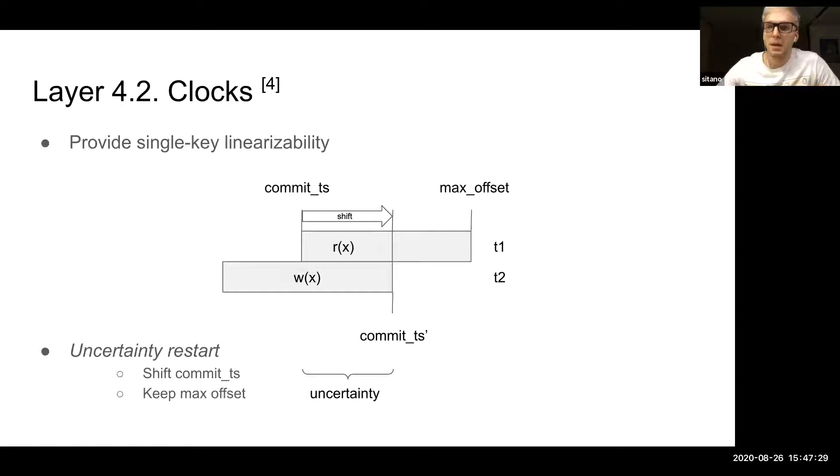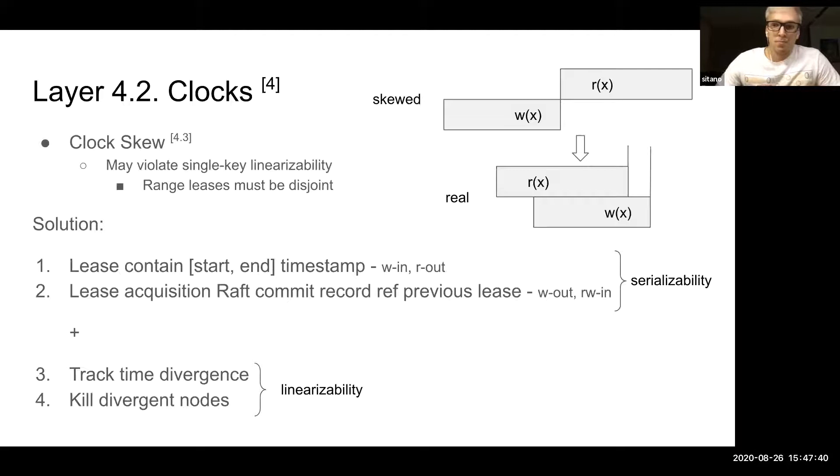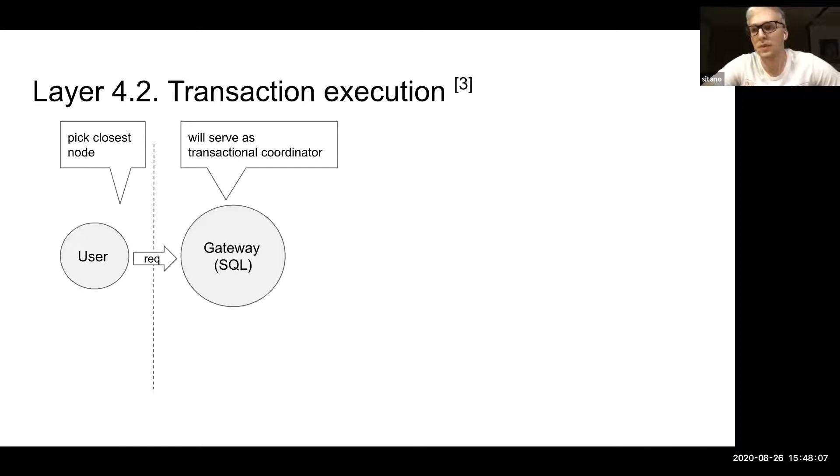The read will explicitly ensure that the write happened exactly before this read, and then it can serve the read. They call it uncertainty restart. The idea is that they shift the transactional commit time forward if they meet this uncertainty, keeping at the same time maximum offset intact. The mechanics of the clock queue basically preserve serializability. But with linear visibility, they had to track divergence of the time and kill the nodes that diverge too much because of this literal lease optimization.